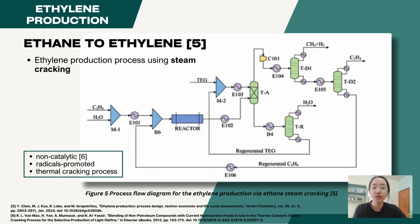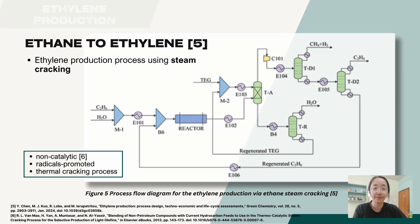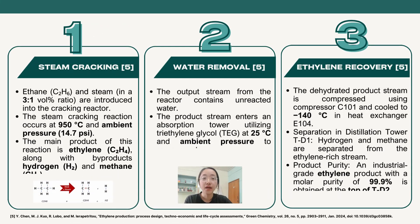This process is a non-catalytic, radical-promoted thermal cracking process which is performed in the presence of steam at high temperature and short residence time. Basically, the production of ethylene is separated into three main sections.